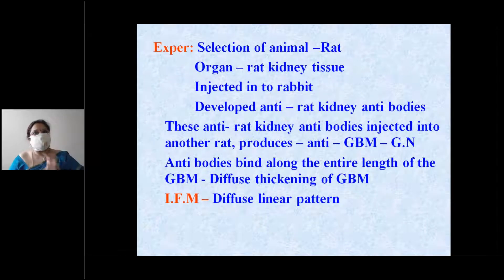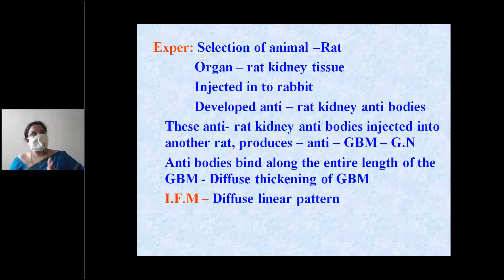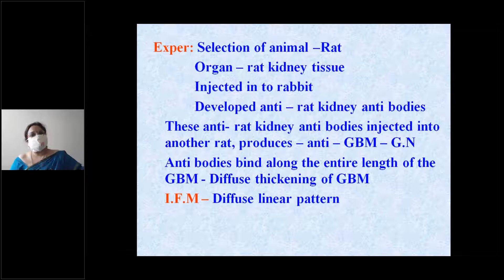The mechanism of glomerular injury is demonstrated by this experiment: a rat kidney tissue was taken, injected into a rabbit, and since it is an antigen to the rabbit, anti-rat kidney antibodies were produced.